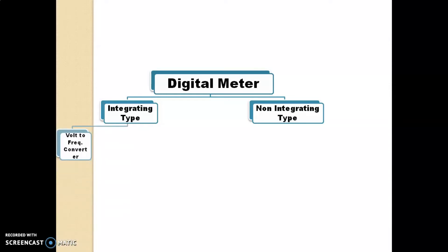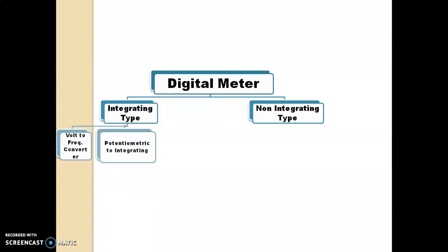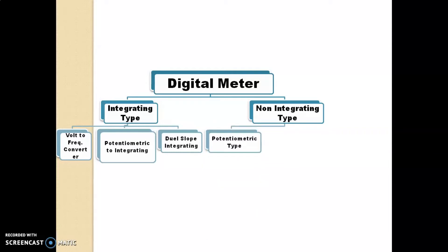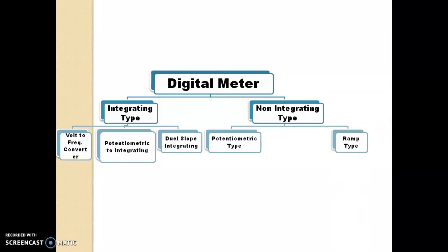First, voltage to frequency converter. Second, potentiometric integrating type of digital meter. Third, dual slope integrating digital meter. In non-integrating type of digital meter, there are also two types: potentiometric type and RAM type.